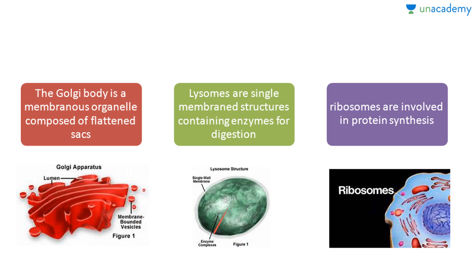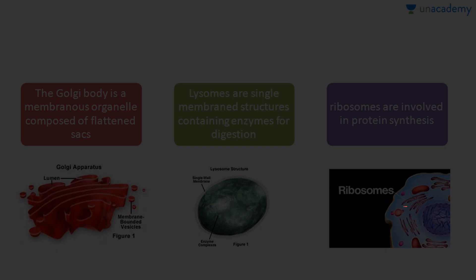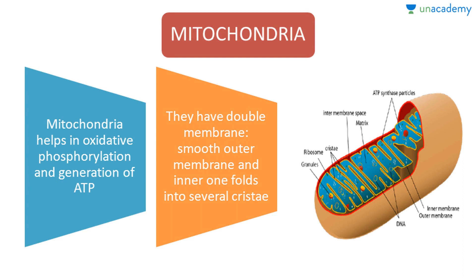Lysosomes are single membrane structures containing enzymes for digestion of several biomolecules — you can see the enzymes here, and they help in digestion. Ribosomes are involved in protein synthesis; you can see the ribosomes here. Mitochondria help in oxidative phosphorylation, which you will learn about in detail later, and in the generation of ATP — adenosine triphosphate. They have a double membrane: a smooth outer membrane and an inner membrane that folds into several cristae.